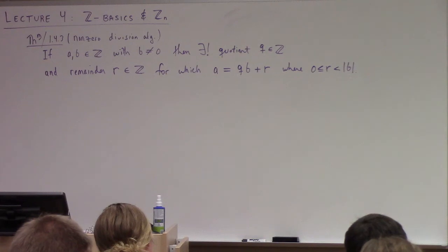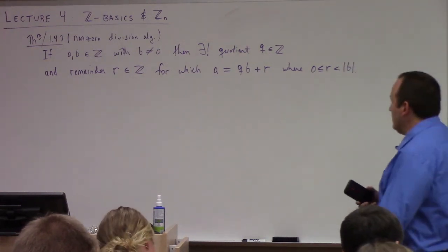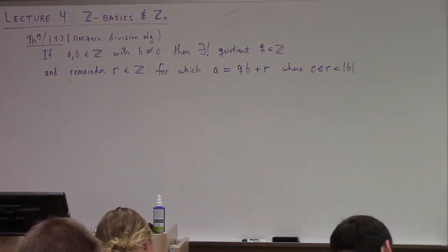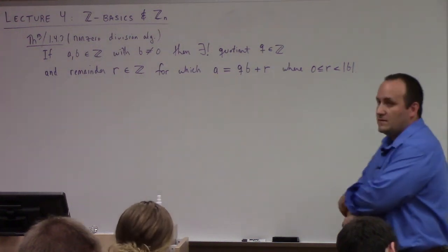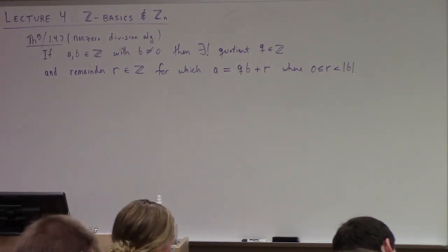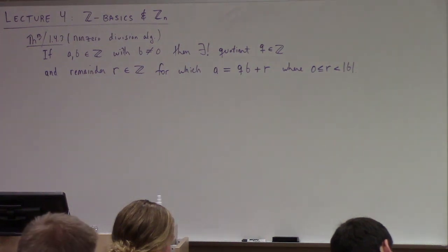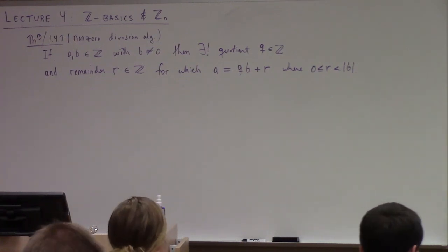The proof is typed up in the notes — you can read it. Basically, what you do is you look at a particular set constructed from the theorem. You look at a set of things of the form a minus qb where a and b are positive, and you show that the existence of a smallest element implies the existence of the remainder. Then you tweak that argument a little bit to get negative things, and there you have it — the division algorithm.